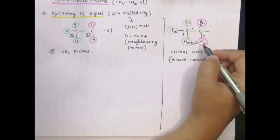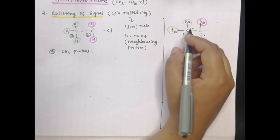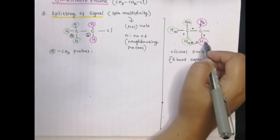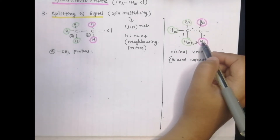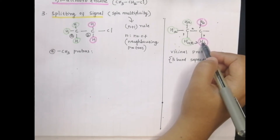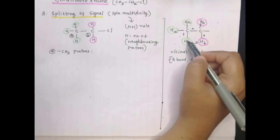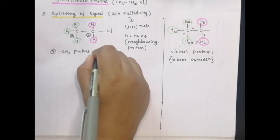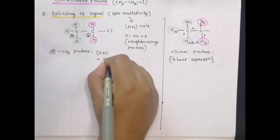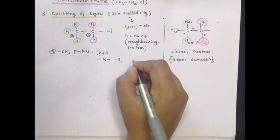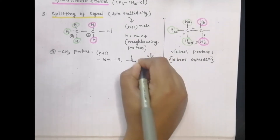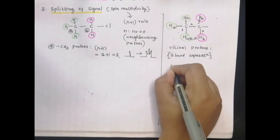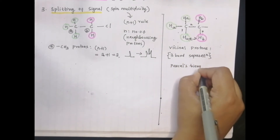For CH3 protons, n plus 1 equals 2 plus 1 equals 3. So we expect a triplet signal. We will use Pascal's triangle to determine the intensity ratios. We place the peaks according to the Pascal's triangle: row 1 is 1; row 2 is 1, 1; row 3 is 1, 2, 1; row 4 is 1, 3, 3, 1.